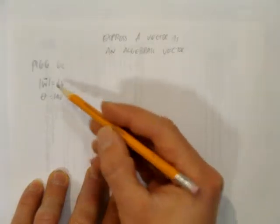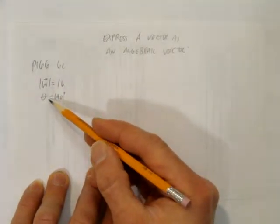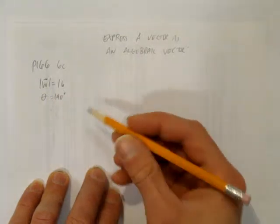We're told that the vector w has a magnitude of 16 and is at an angle to the x-axis of 190 degrees.